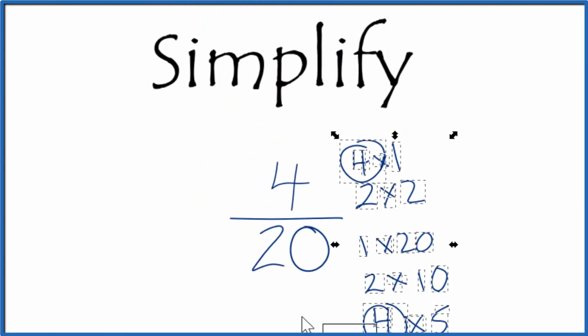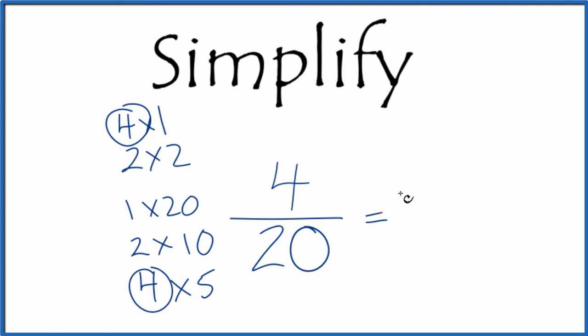Let's move these over here to give ourselves some room. 4 divided by 4 is 1 and 20 divided by 4 gives us 5. So we've simplified the fraction 4 twentieth down to 1 fifth.